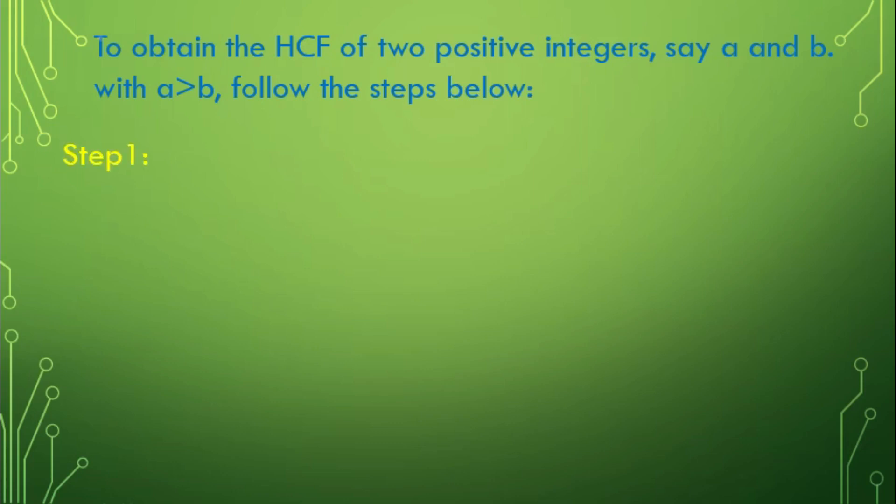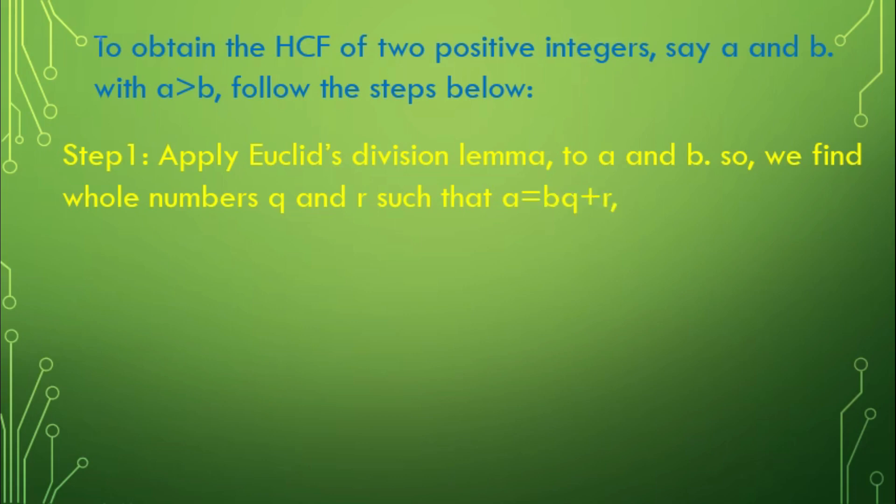Apply Euclid's Division Lemma to A and B, so we find whole numbers Q and R such that A equals BQ plus R, where 0 ≤ R < B. Step 2. If R equals 0,